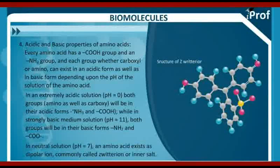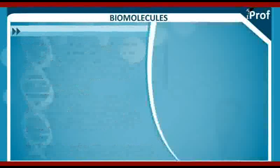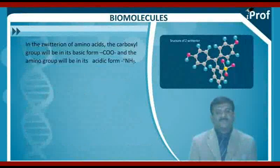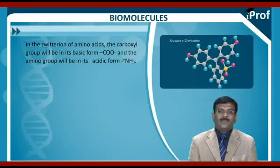In neutral solution where pH is more or less equal to 7, an amino acid exists as a dipolar ion, commonly called the zwitterion or inner salt. In the zwitterion of amino acids, the carboxyl group will be in its basic form COO-, and the amino group will be in its acidic form NH3+.